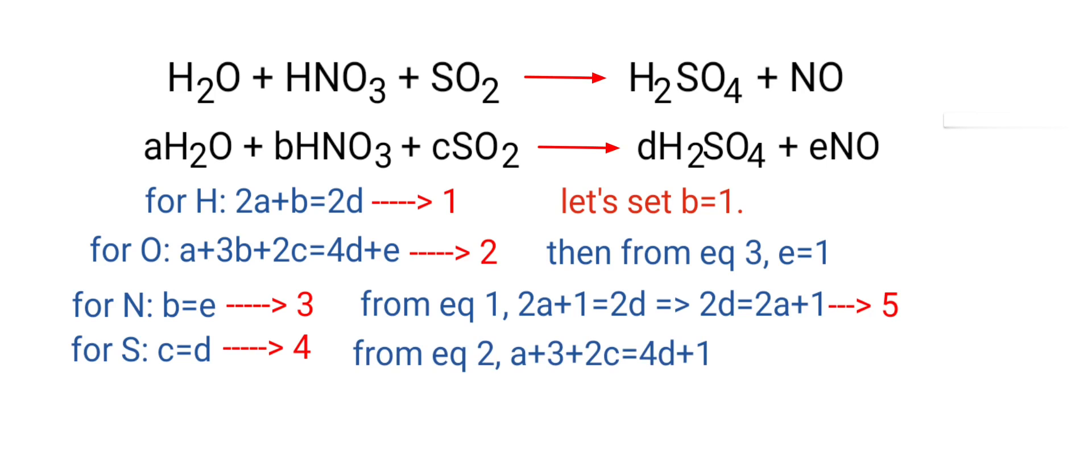From equation 2, A plus 3 plus 2C is equal to 4D plus 1. So A plus 2C plus 2 is equal to 4D.